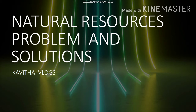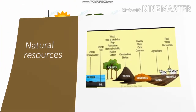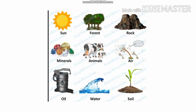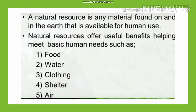Natural resources include water, oil, forest, rocks, minerals, soils, animals, sun, and air. A natural resource is any material found on and in the earth that is available for human use.